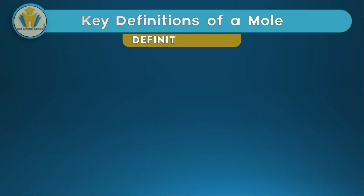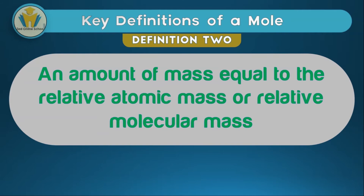A mole is also an amount of mass equal to the relative atomic mass or relative molecular mass. So if you get the mass of a certain substance, and that mass is equal to the relative atomic mass or the relative molecular mass of that substance, then you have gotten one mole of that substance.